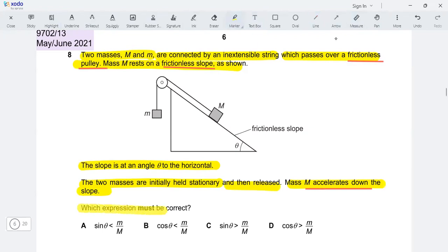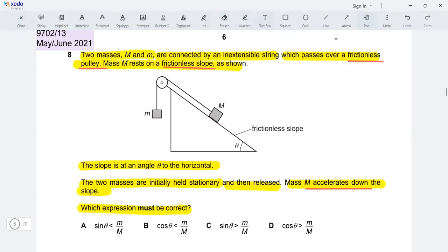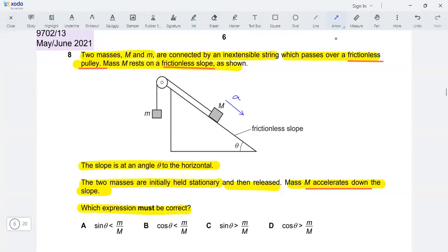Which expression must be correct? Okay, so this is the mass m which is accelerating down the slope. It has an acceleration down the slope. Now since it has an acceleration down the slope, the direction of the resultant force must also be down the slope.